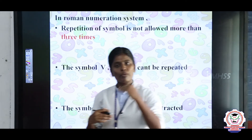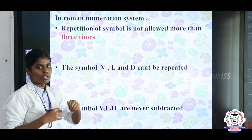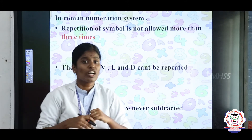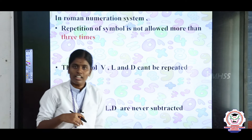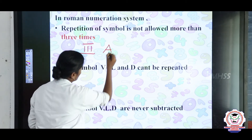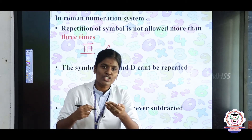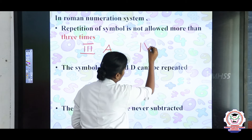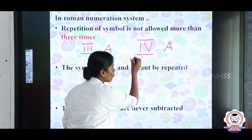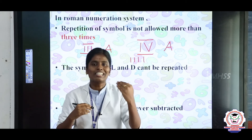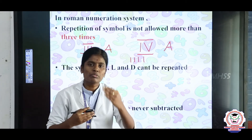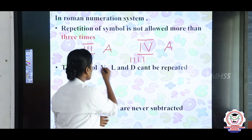Listen children, some important points to keep in mind. In the Roman numeration system, repetition of a symbol is not allowed more than 3 times. For example, if you are in third standard section A, you write III A. But for fourth standard, you write IV A — not IIII — because the rule says repetition of a symbol is not allowed more than 3 times. It is allowed only 3 times.